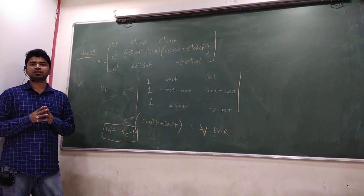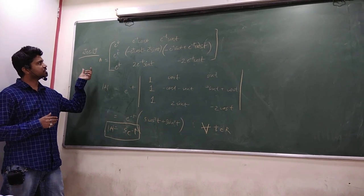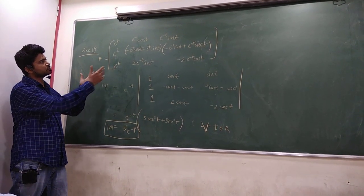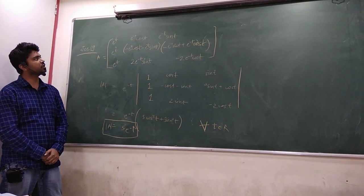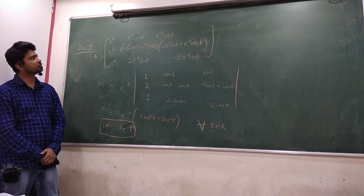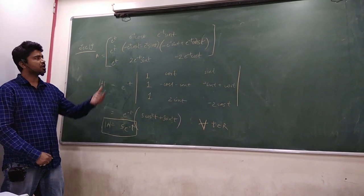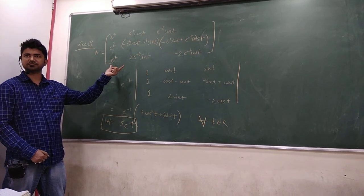In the question, there was a matrix which was given, that is A is equals to, this was the matrix, e to the power t, e to the power minus t, cos t, e to the power minus t, sin t, and you have these elements.